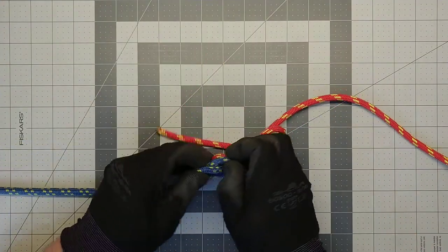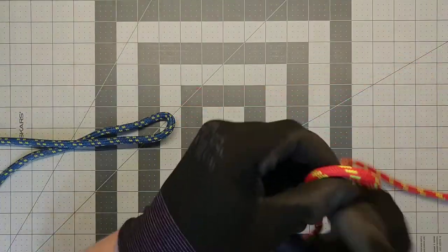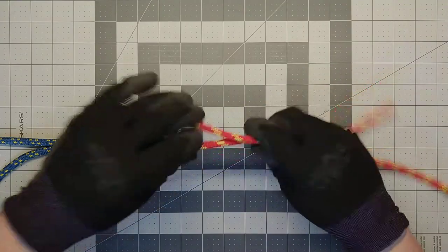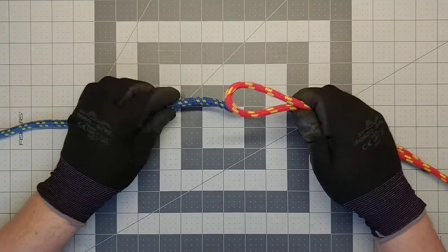We'll start with a bight of rope on rope number one. We'll take rope number two and come up through the bight, around, and then back underneath rope number one.